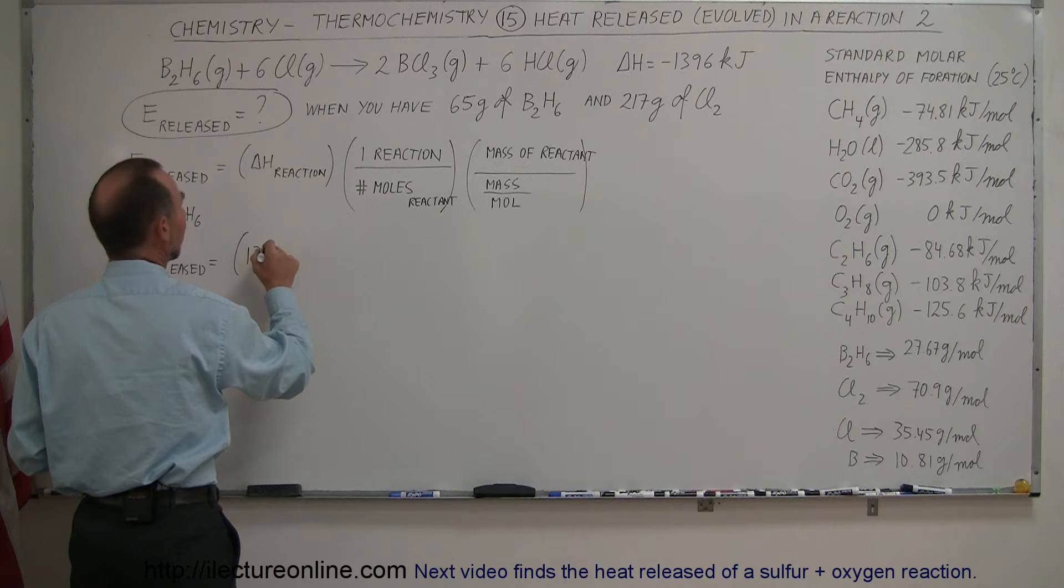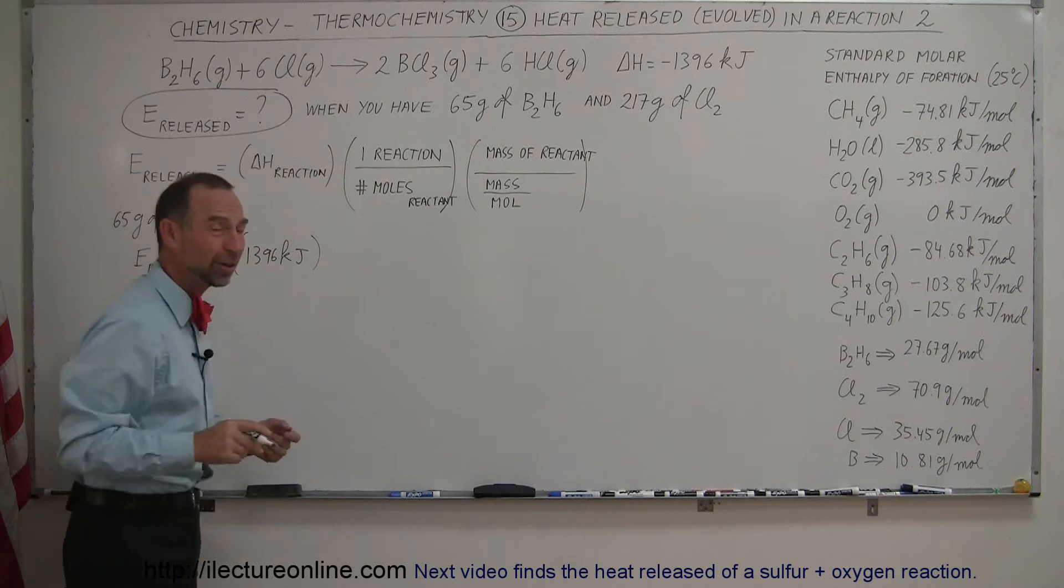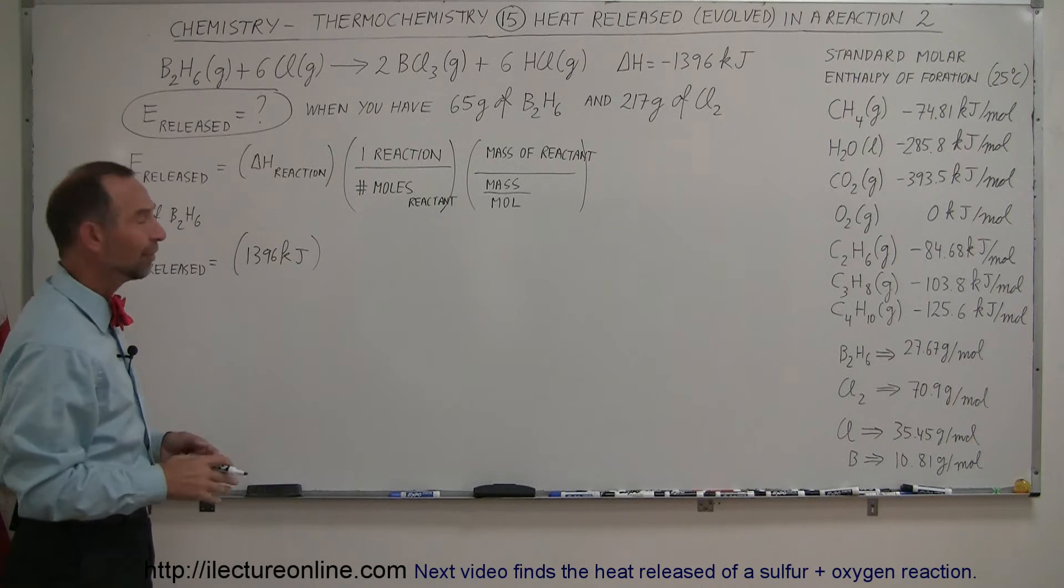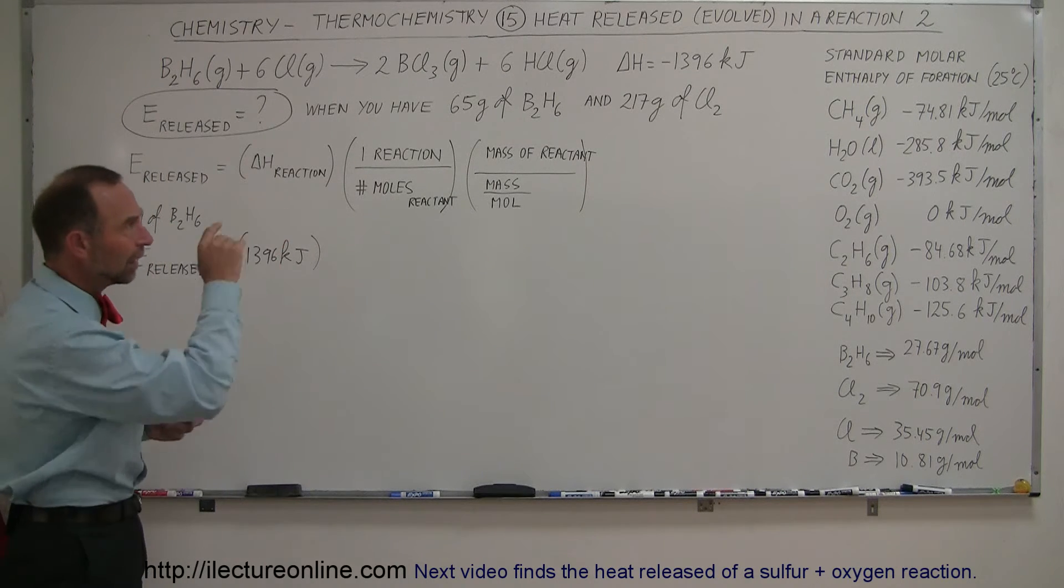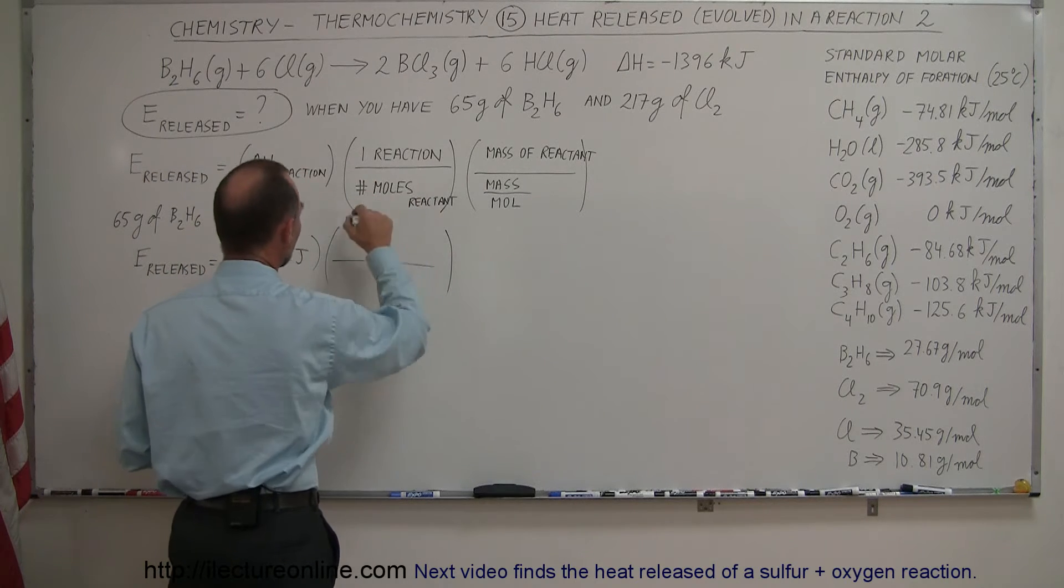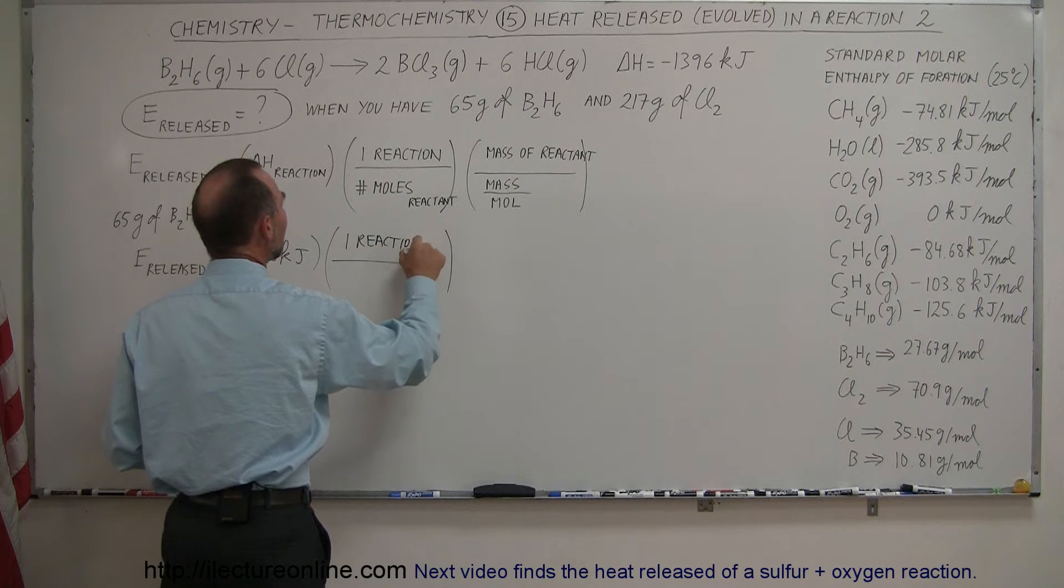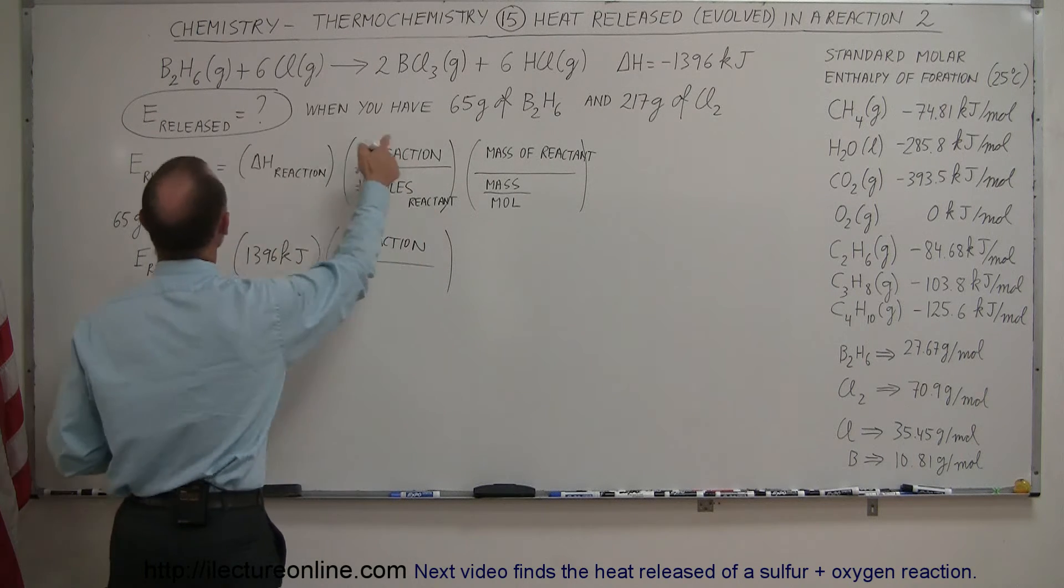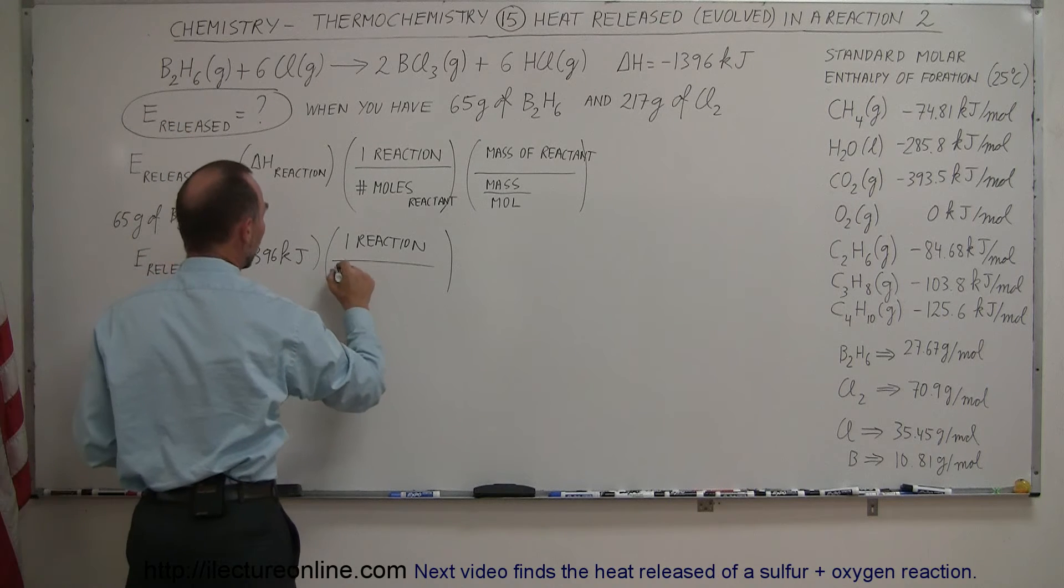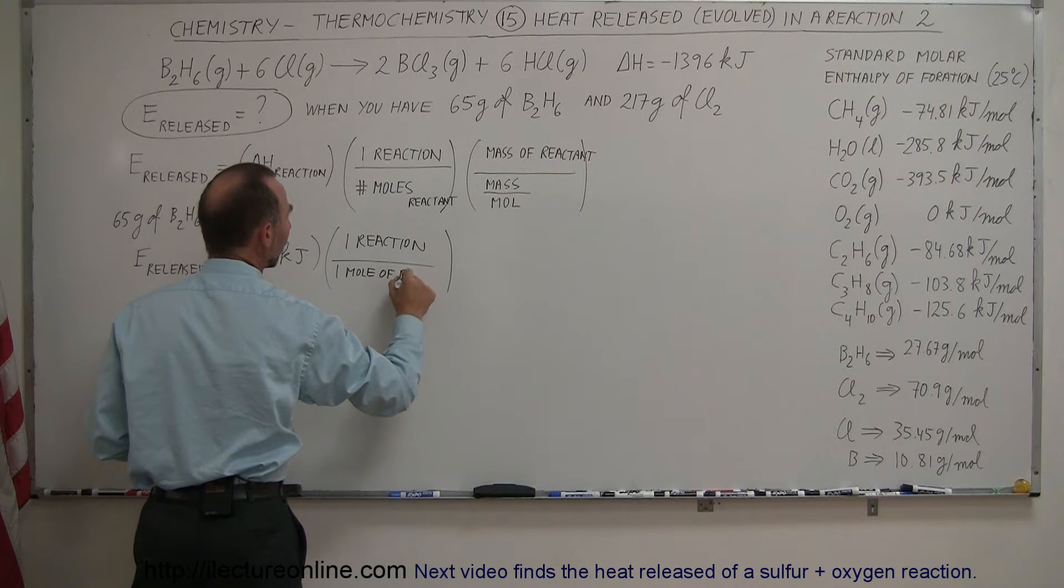The reason we make this positive is because we're saying that's the energy released, so it's indeed that many kilojoules. If we just talk about the enthalpy, then we have to put in the negative sign as well. We multiply this times one reaction - that's always the same. Now, how many moles of the reactant do we have? When we come up here, we're dealing with diborane, and we only have one mole in the reaction. So, one mole of diborane.